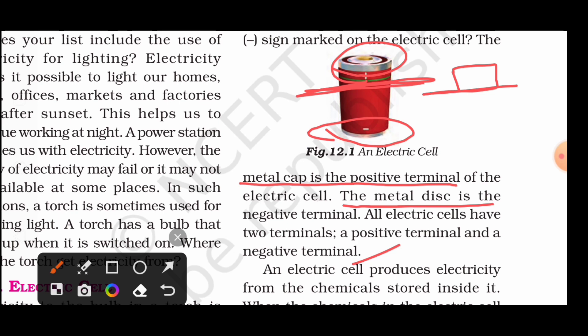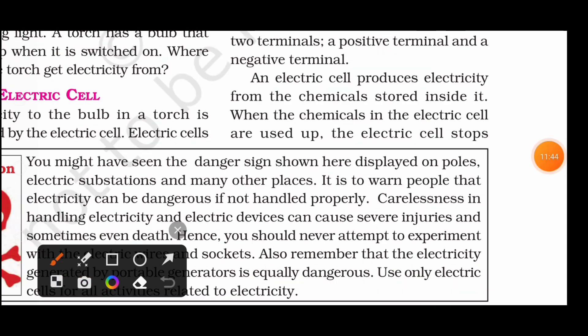An electric cell produces electricity from the chemicals stored inside it — meaning chemical energy is converted into electrical energy. Energy can neither be created nor destroyed, but it can be transformed from one form to another. When we put a cell in a device, placing the positive and negative terminals correctly is very important. When the chemicals in the electric cell are used up, the cell stops working — that is how cells become dead.